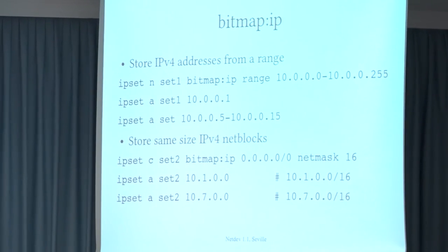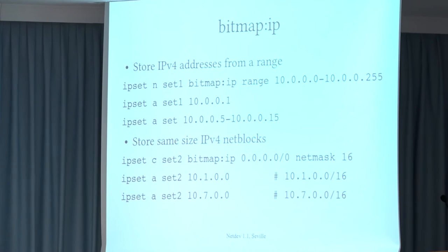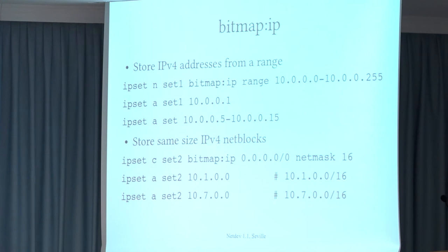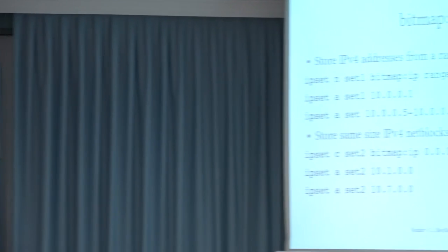In practice, there are places that use the bitmap IP type just to store in a set the clients in an internal network which can have access to the internet. The internal network is usually some kind of IPv4 address space, which is continuous, and it can be quite easily represented in a single bitmap IP set.